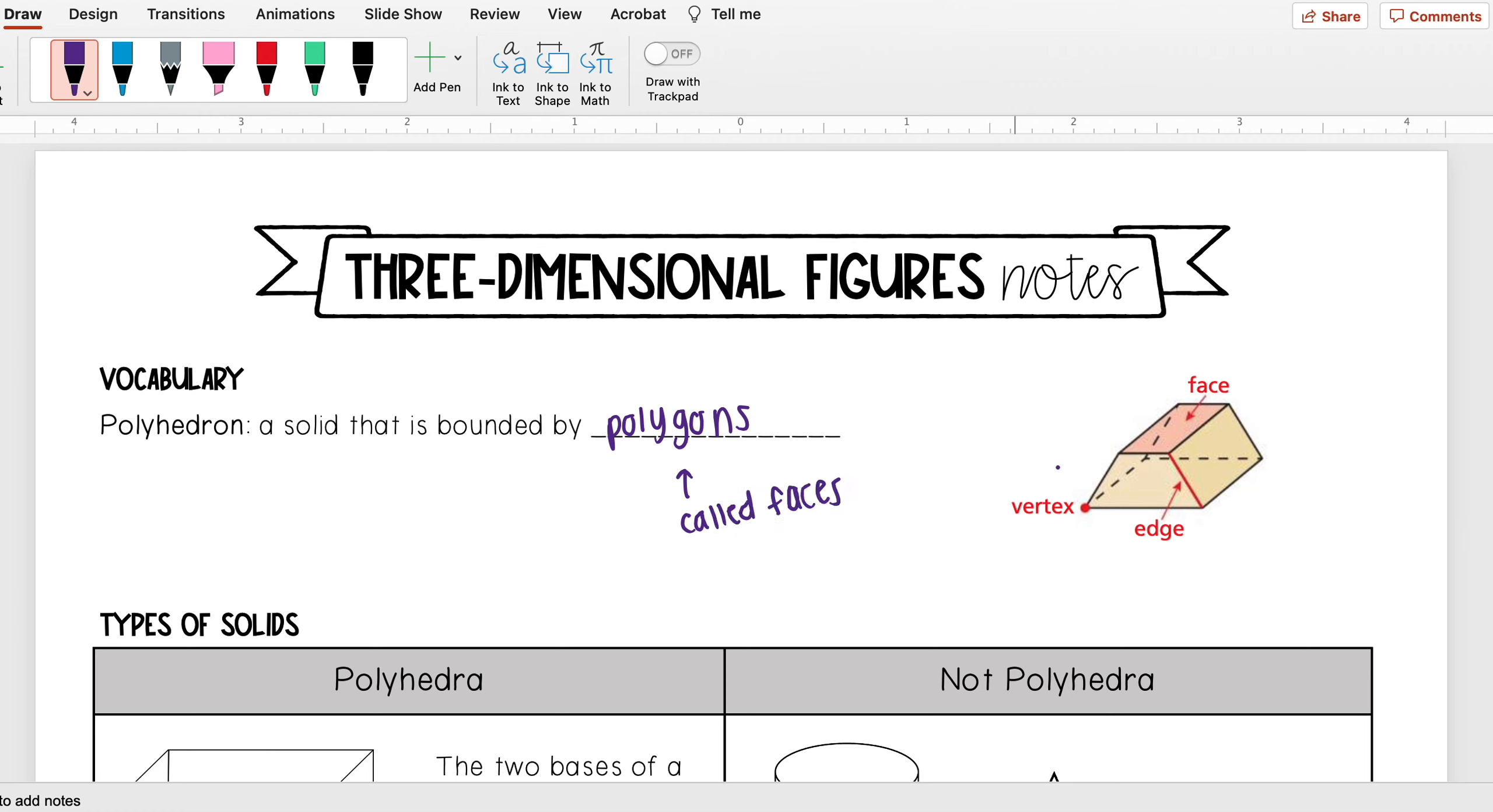So we have an example of a polyhedron right here, and you can see some different vocabulary related to it. All the polygons are going to be called your faces, so for instance this rectangle up on top would be a face, this trapezoid right here would be another face. Your edges are going to be those segments that connect the corners of your polygon, so this red line here would be an edge, and your vertex is where all of your edges meet.